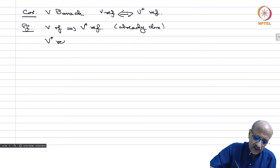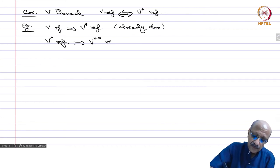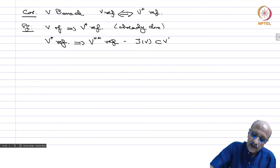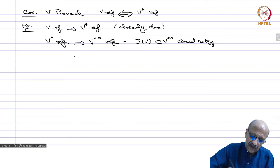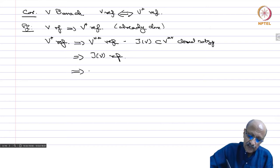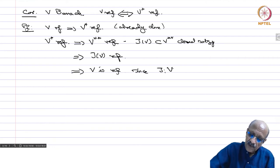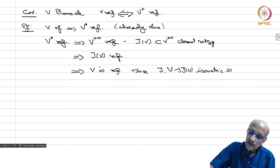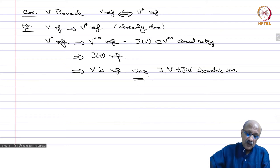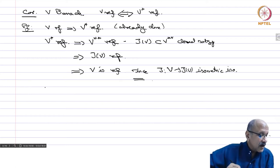Now assume V star is reflexive. This implies V double star is reflexive by the same argument, and JV contained in V double star is a closed subspace. By the previous corollary, JV is reflexive. Since J from V to JV is an isometric isomorphism, this implies V is reflexive. So V is reflexive if and only if V star is reflexive.